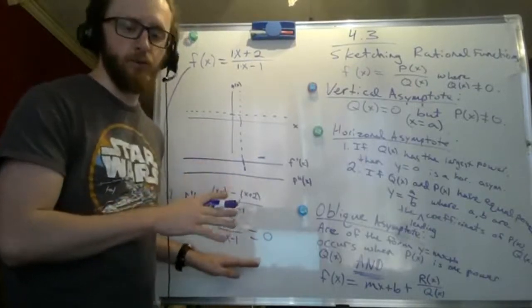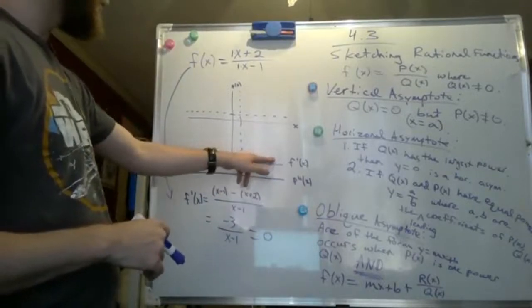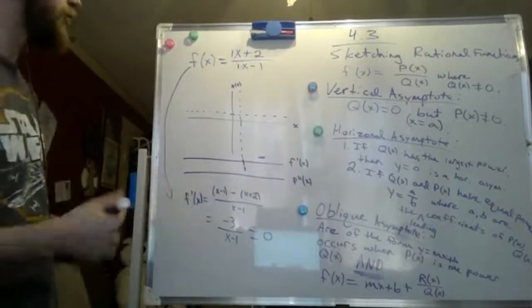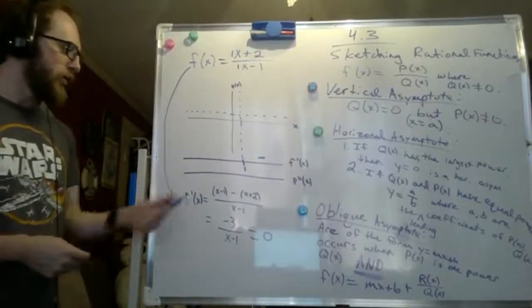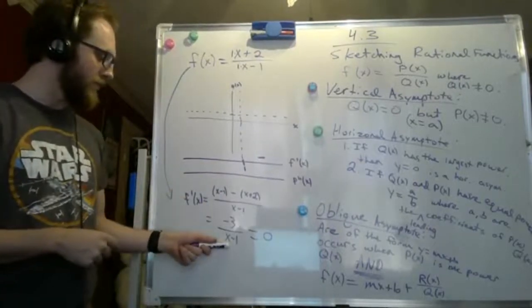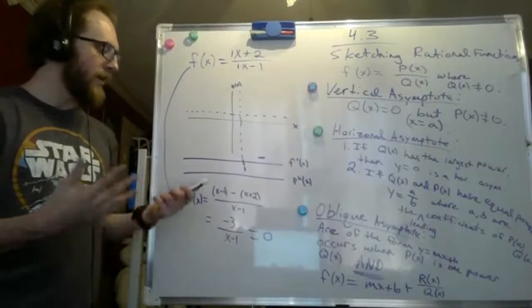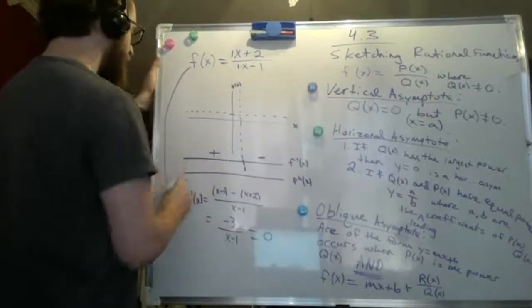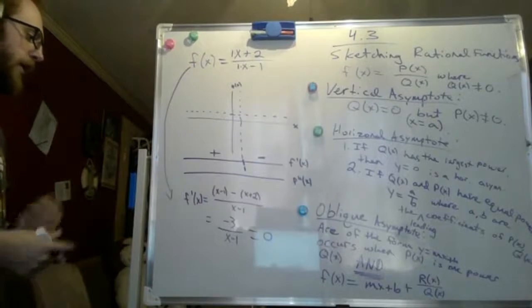What about the left side? Plugging in 0: 0 minus 1 is negative 1, negative 3 divided by negative 1 is positive 3. So we are increasing for values to the left of 1. Now we need to find our hypercritical points, which comes from our second derivative. I'm going to rewrite the first derivative by bringing the denominator up with a negative power — writing it as negative 3 times x minus 1 to the negative 2. That way I can use the chain rule instead of the quotient rule again.